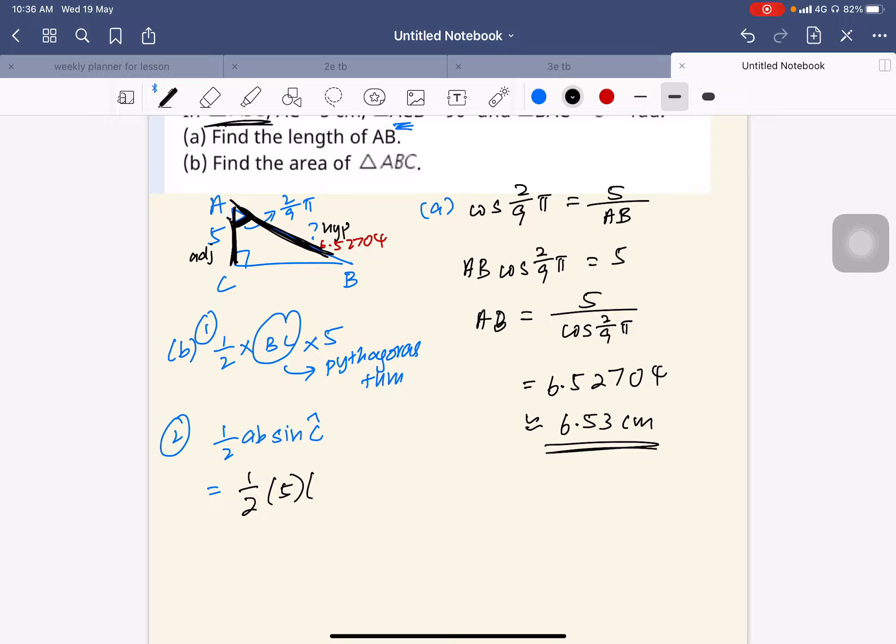So half AB sin C. So again make sure your calculator is in the radian mode. My answer is 10.4888. So 3 significant figures is 10.5 cm squared.